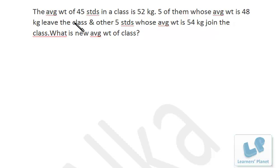In this problem, the average weight of 45 students in a class is 52 kg. 5 of them whose average weight is 48 kg leave the class, and other 5 students whose average weight is 54 kg join the class. What is the new average of the class?